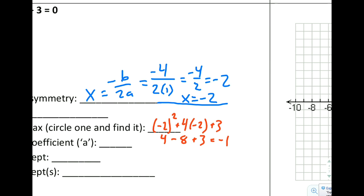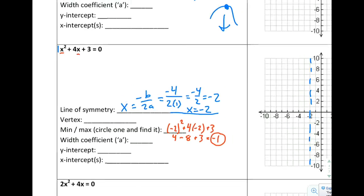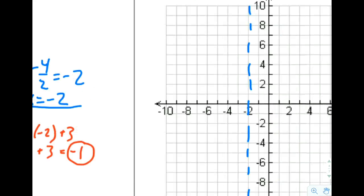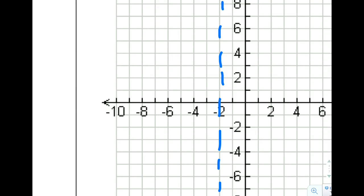So the max or min is going to be negative 1. Now in this particular problem, we have a equals 1. So our graph faces upwards. We're going to have a low point. We're going to have a minimum on this graph, and that minimum is going to occur at negative 1. So I go over to my graph and I look at my axis of symmetry. My minimum occurs on the axis of symmetry at a height of negative 1. That point right there is going to be my vertex, then.